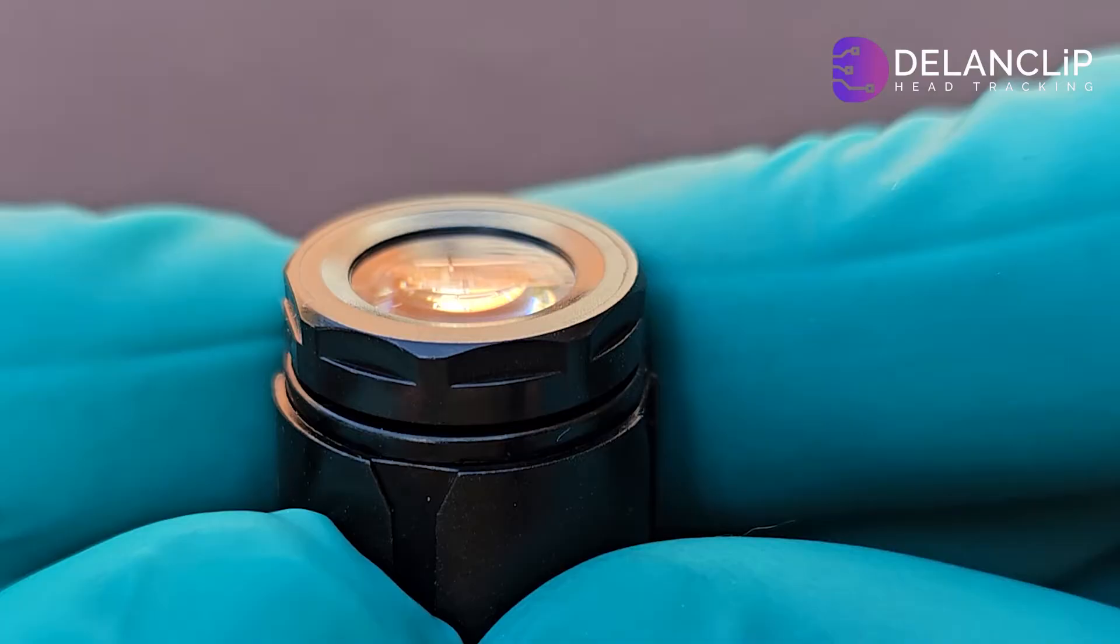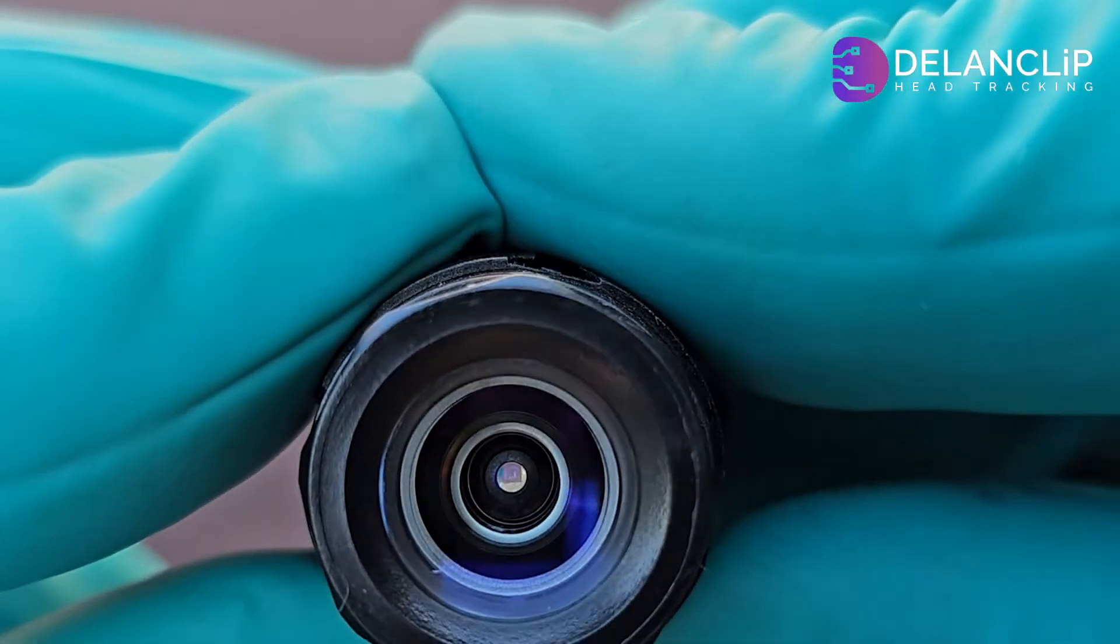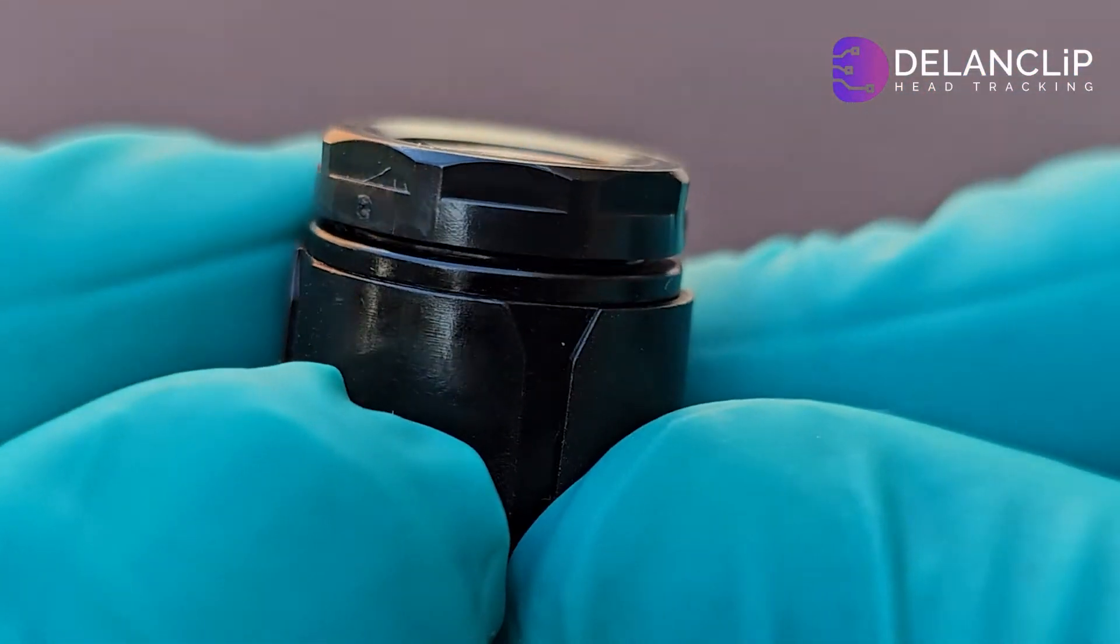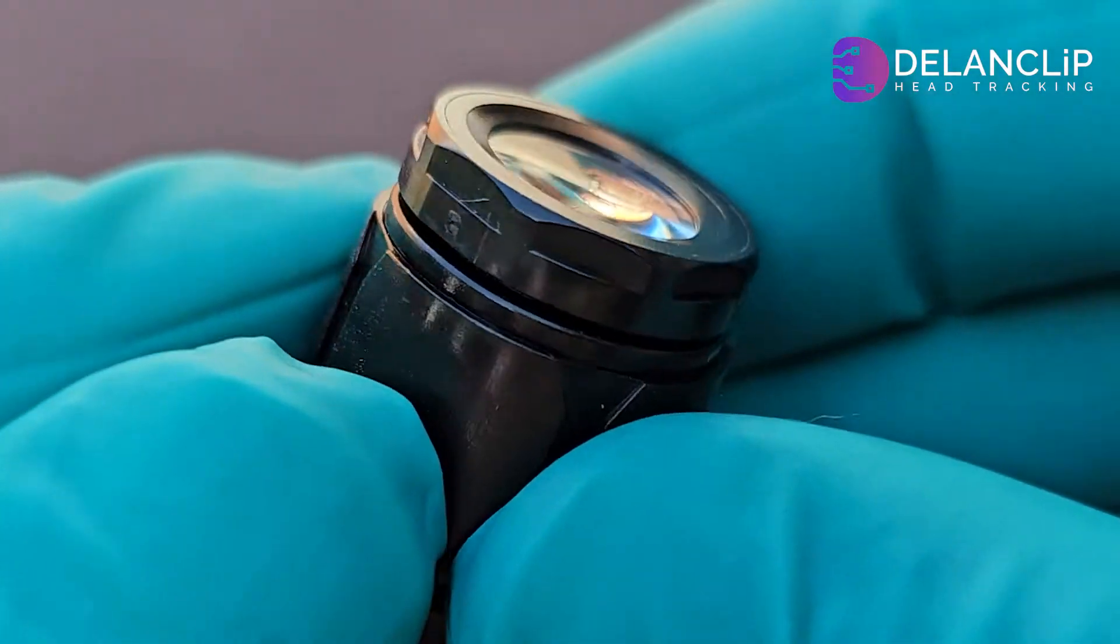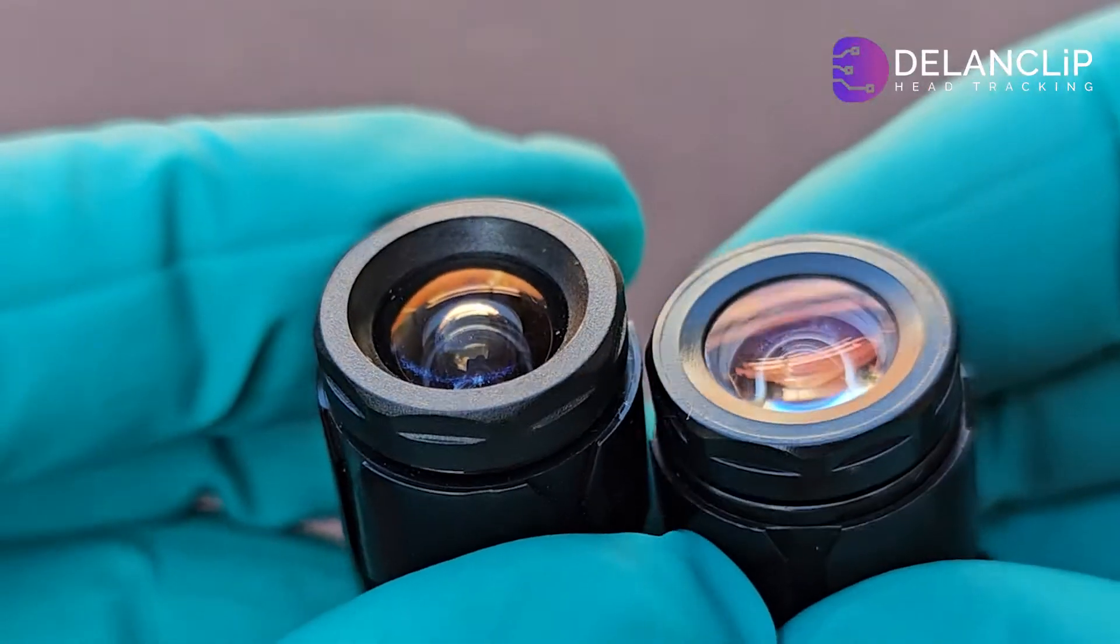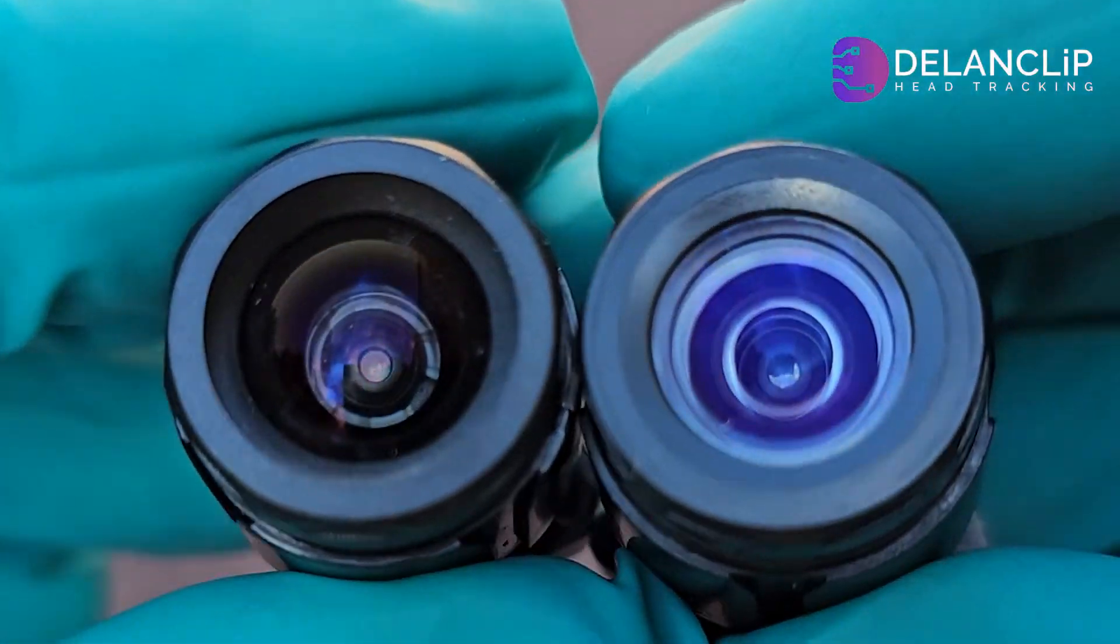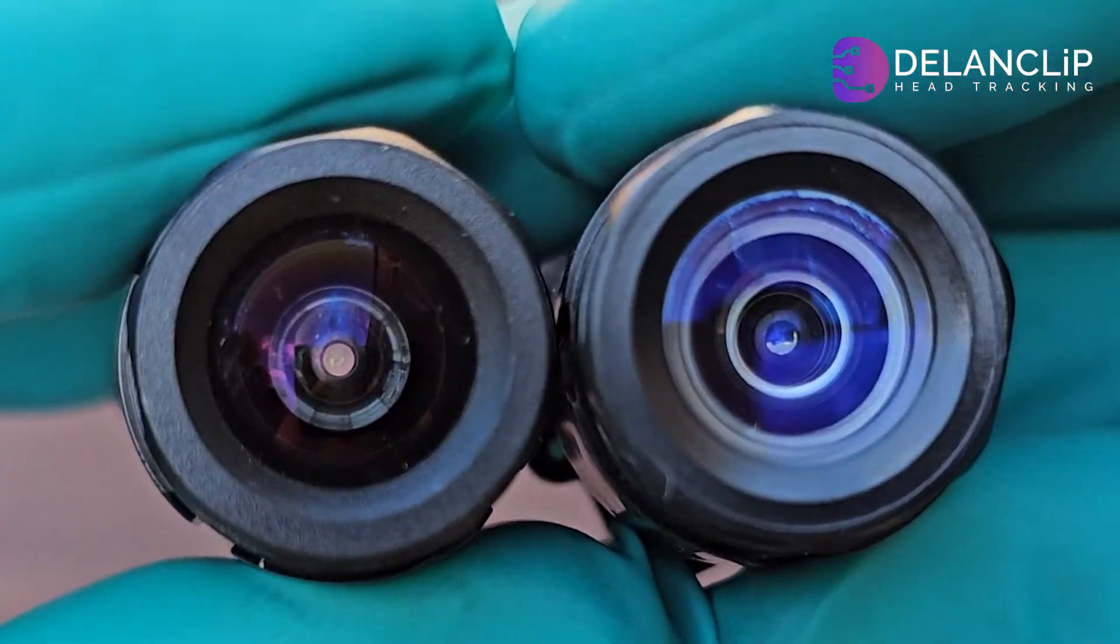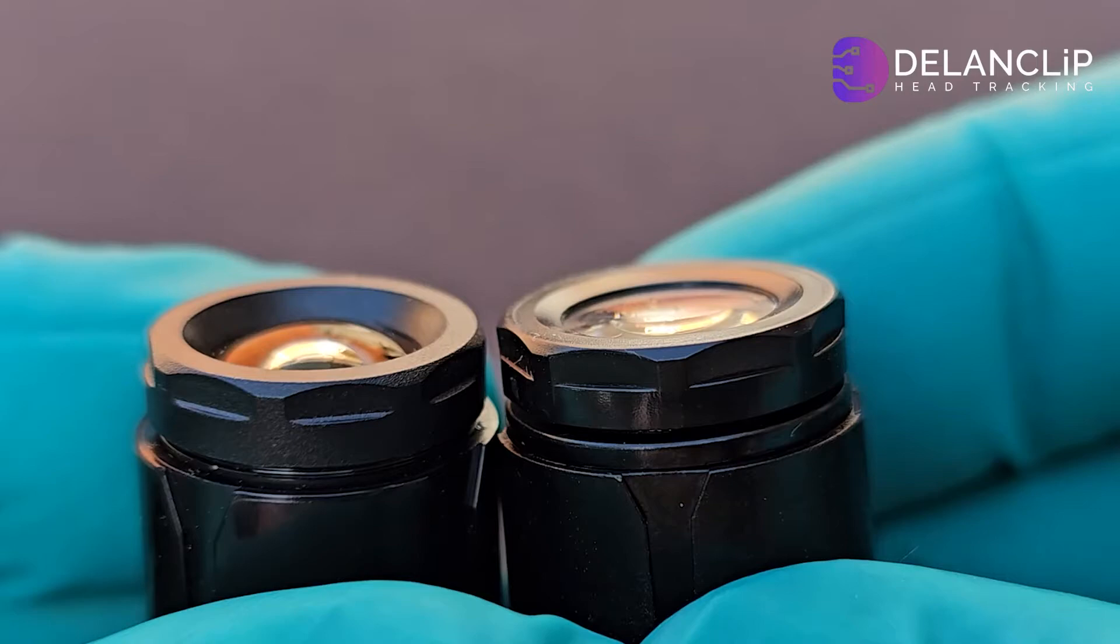Before we dive into the tutorial, let's take a quick look at the two different versions of the PS3 camera. Here's the flat lens version, which we'll be modifying today. And for comparison, here's the convex lens version. This guide specifically covers the flat lens model.